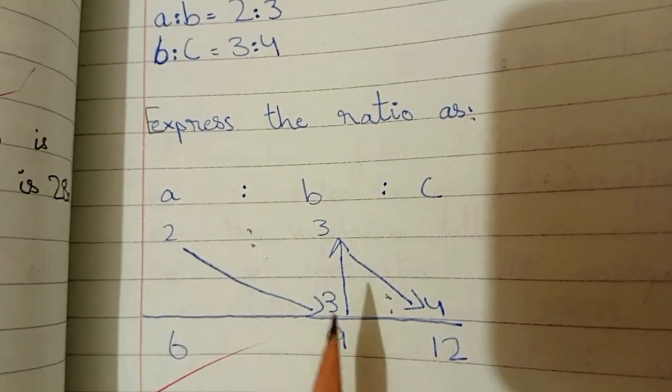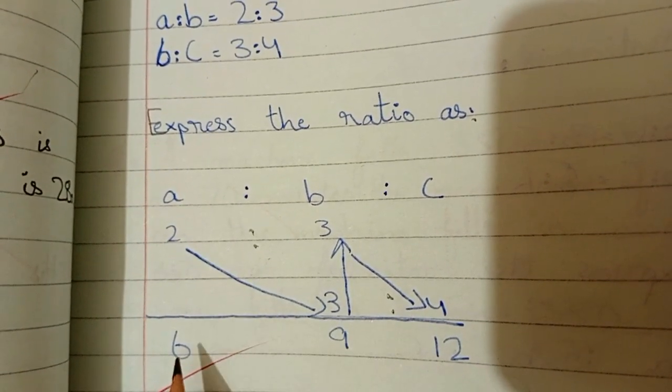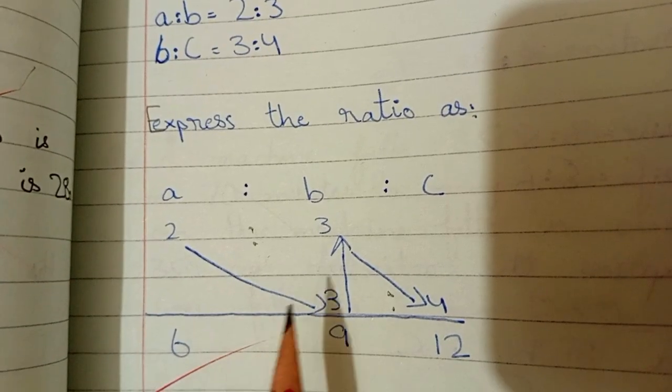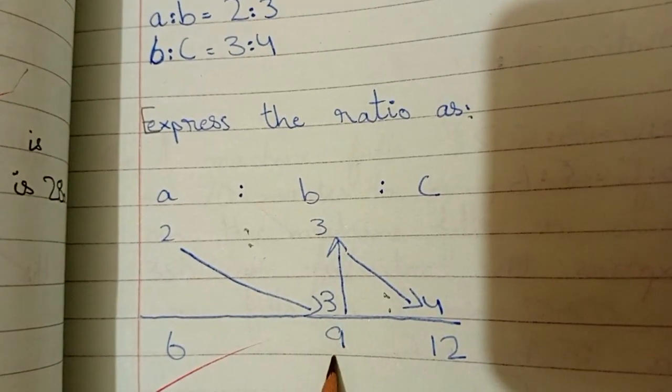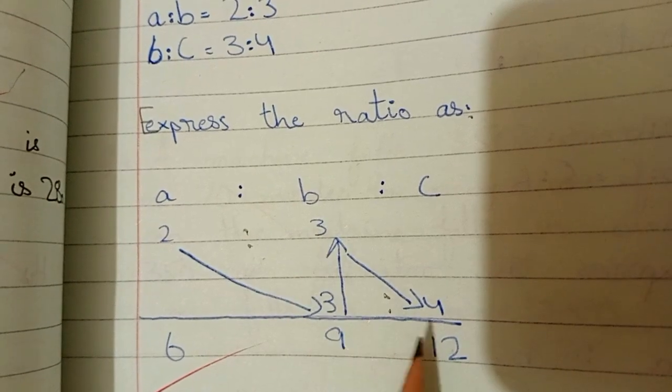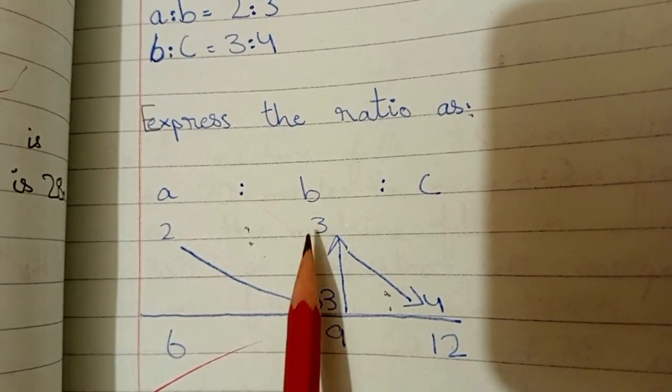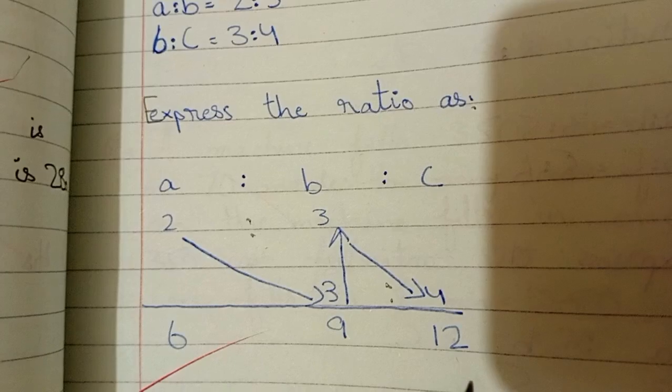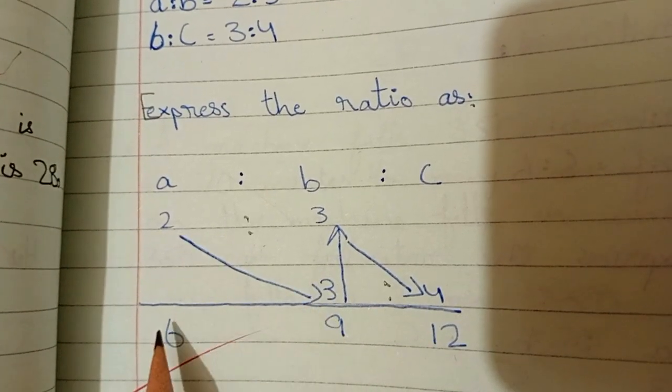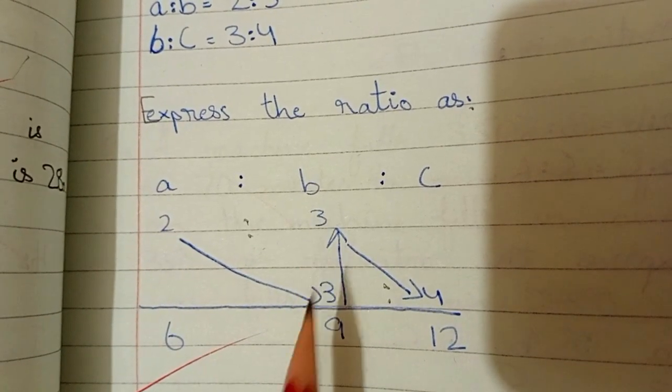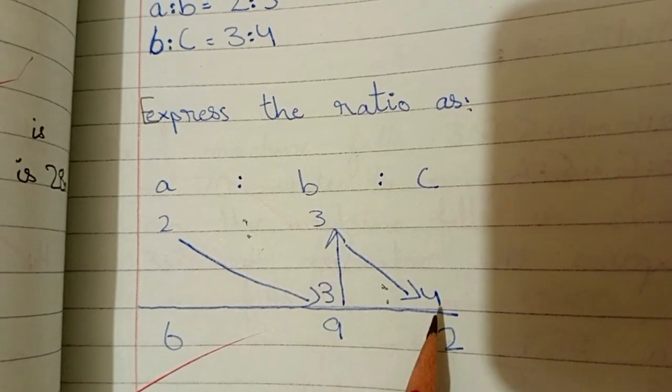اس کے بعد A کو B سے multiply کریں گے تو آ جائے گا 2, 3, 0, 6. اسی طرح B کو B سے multiply کریں گے تو 9 اور B کو C سے کریں گے تو وہ 3, 4, 0, 12. یعنی اس کو اس سے کیا یہ رہا اس کو اس سے کیا یہ رہا اور پھر اس نمبر کو اس سے.